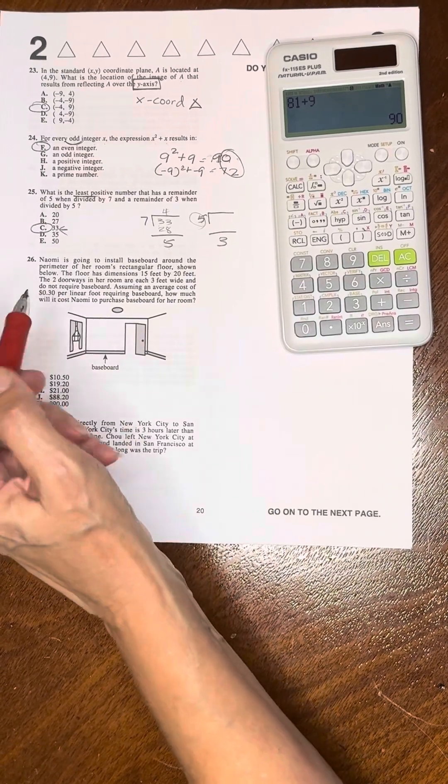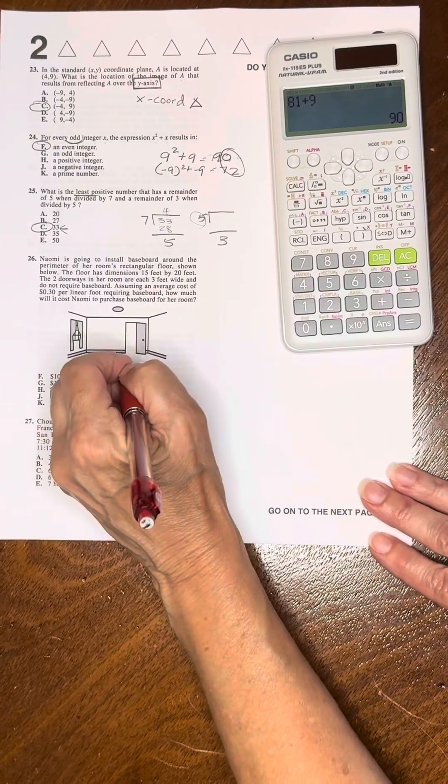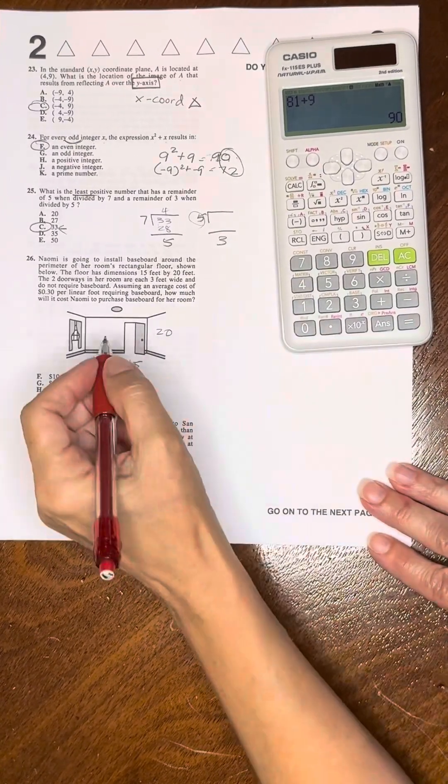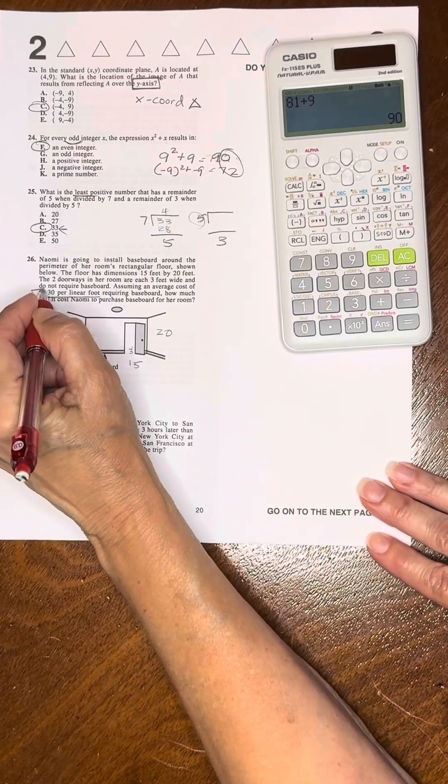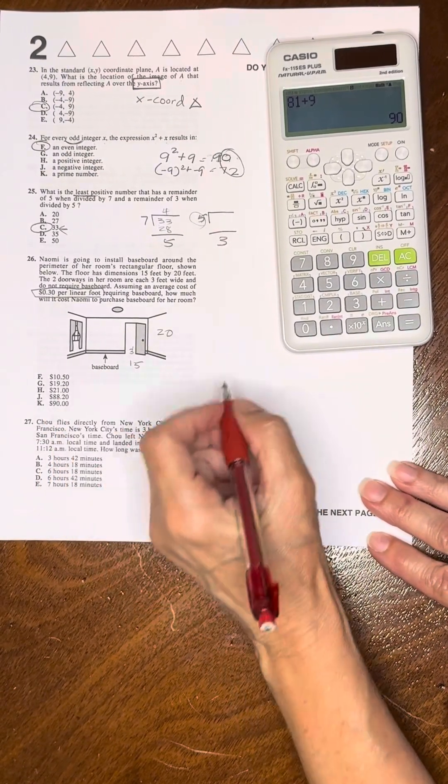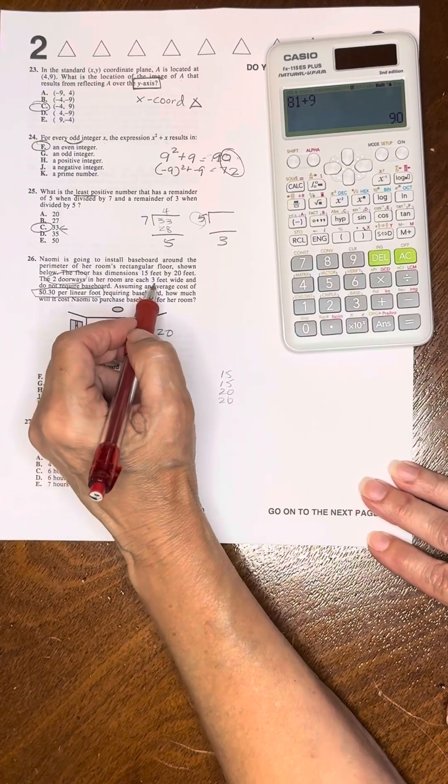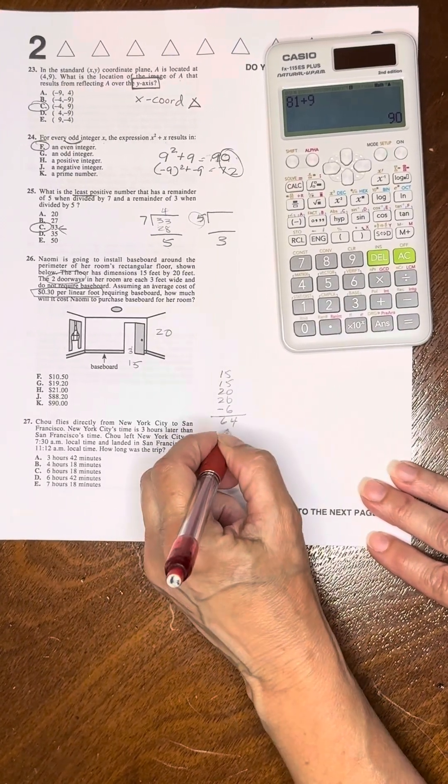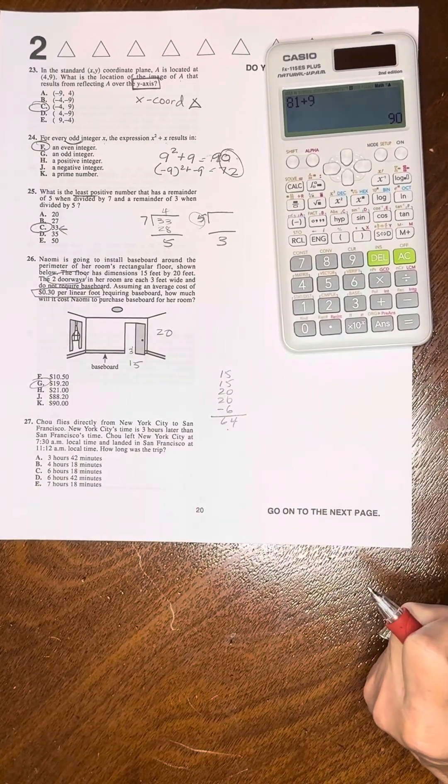Number 26: Naomi is going to install baseboard around the perimeter of a rectangular room. The floor has dimensions of 15 by 20 feet. The two doorways are three feet wide and don't require baseboards. Assuming the average cost is 30 cents per linear foot, how much will it cost? So it's the perimeter. So it's 15 and 15 and 20 and 20. Two doors, so minus six, gives you 64. When you multiply 64 times 30 cents, it's $19 and 20 cents.